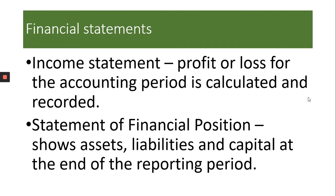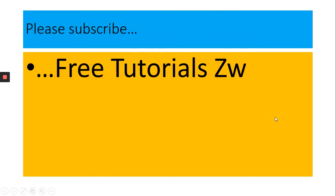So to summarize: the first thing is the source documents, then the subsidiary books, then the ledgers, then the trial balance, and finally the financial statements. Thank you.